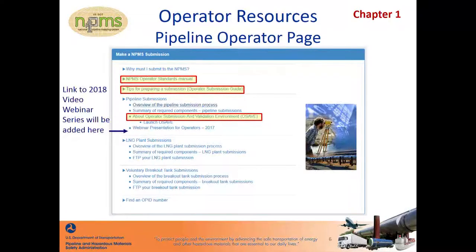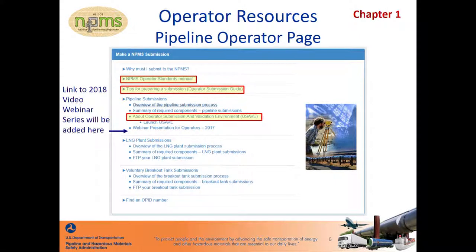At the top of the pipeline operator page is all the information you need to make an NPMS submission. This is where you can download the current version of our two primary operator documents: the Operator Standards and the Operator Submission Guide. The third link highlighted takes you to the About OSAVE page. OSAVE is the Operator Submission and Validation Environment, which is a one-stop shop for everything related to NPMS pipeline submissions. Go to this page to read about OSAVE and access help guides and demo videos.